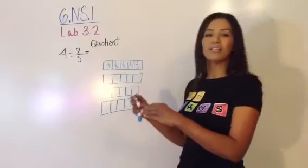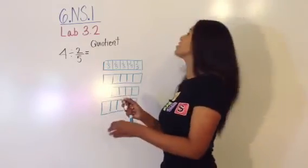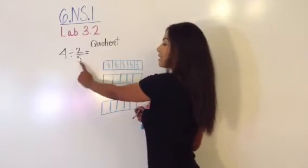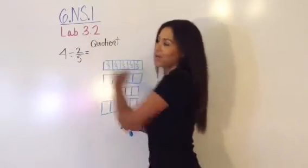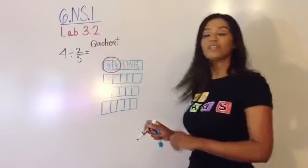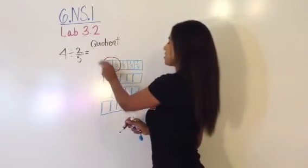So although we can look at division in two ways, like we learned yesterday, we're going to stick with this model of how many 2/5 are in 4. So we have, here's a group of 2/5, would you agree? 1/5 and 1/5. So that's a group of 2/5. Here's another group of 2/5.